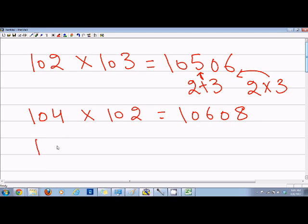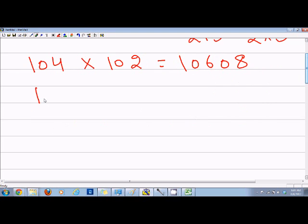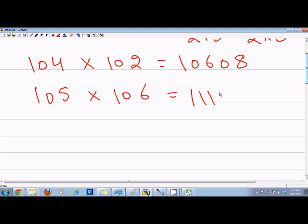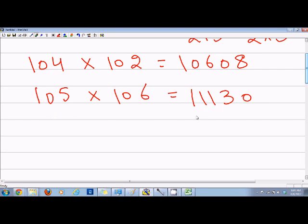Again, if we have 105 and I want to multiply by 106, then the answer will be: 5 plus 6 is 11, and 5 times 6 is 30, so 11130. This is a quick way you can multiply numbers which are close to 100.